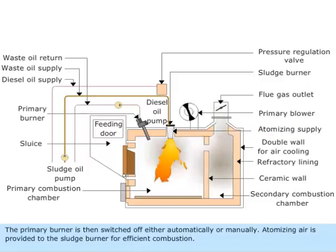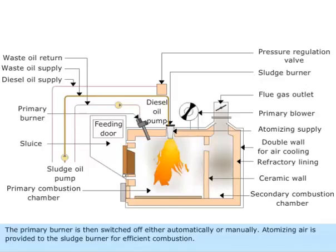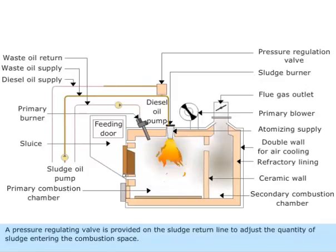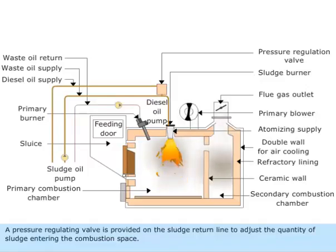Atomizing air is provided to the sludge burner for efficient combustion. A pressure regulating valve is provided on the sludge return line to adjust the quantity of sludge entering the combustion space.